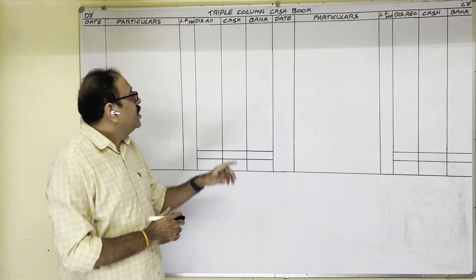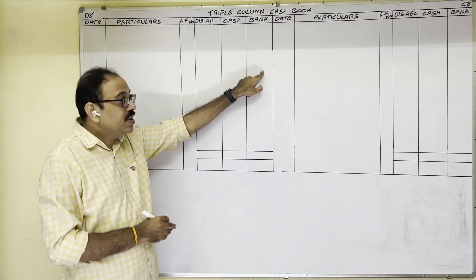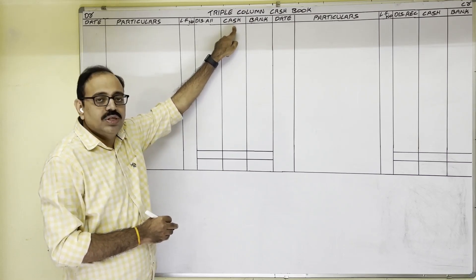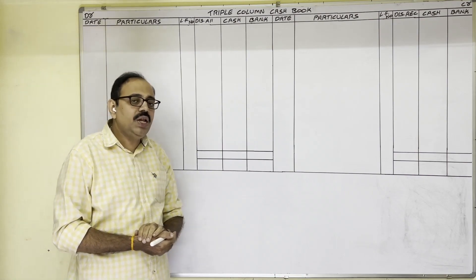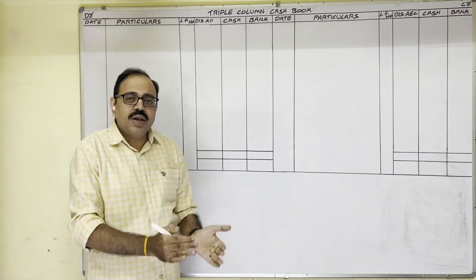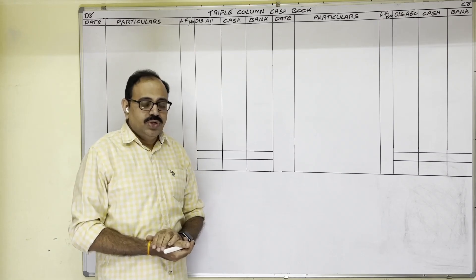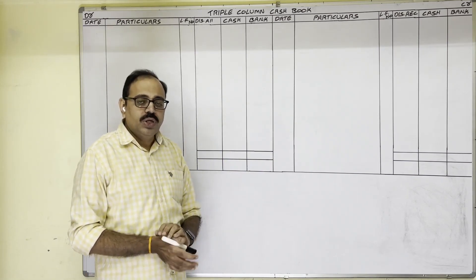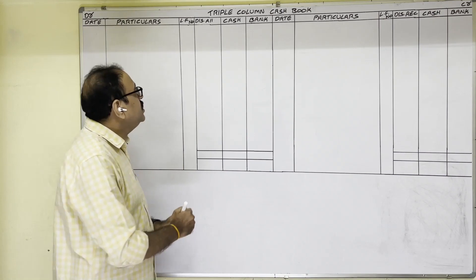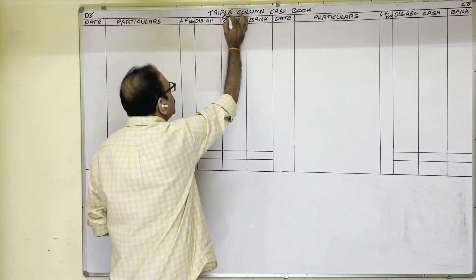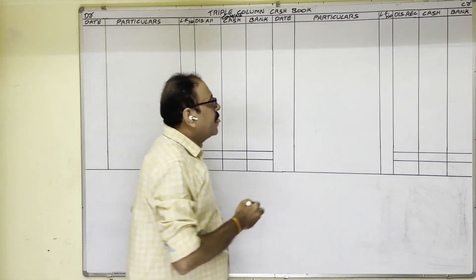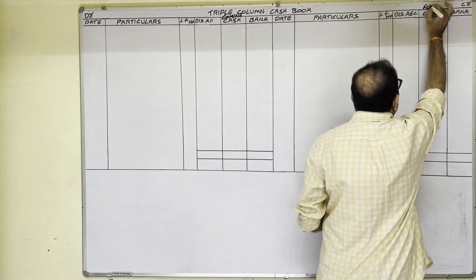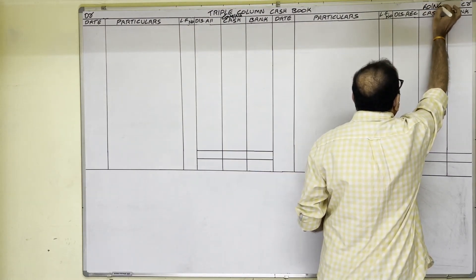Cash account and bank account are being prepared. Cash account is a real account because cash is an asset. The real account rule is: debit what comes in, credit what goes out. In the firm's books, if cash is coming in, write in the debit side cash column. If cash is going out from the firm, write in the credit side cash column.